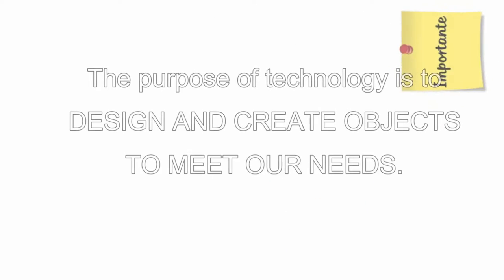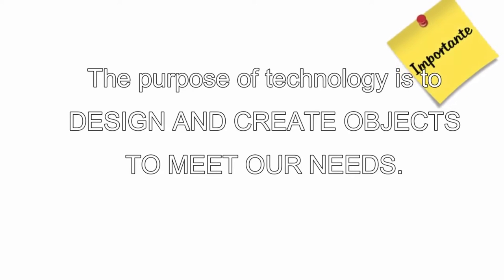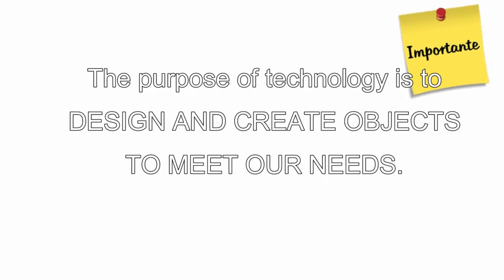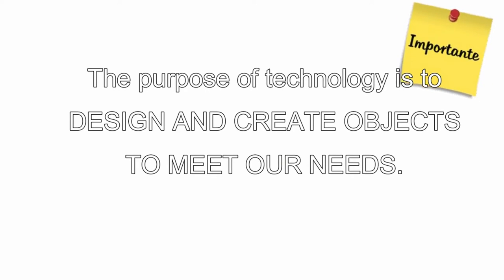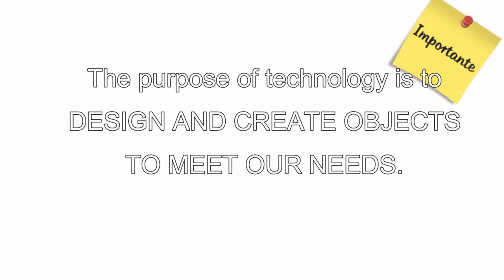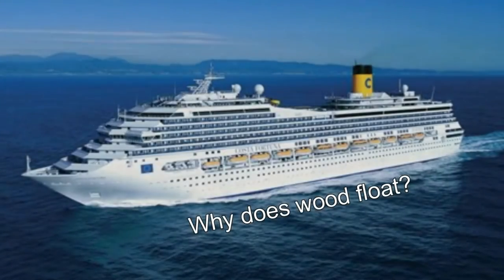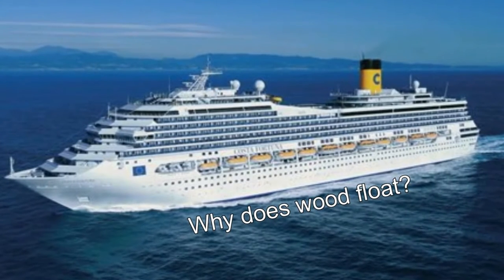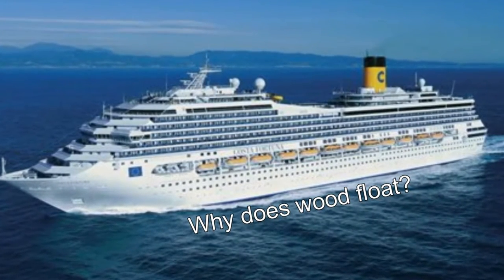On the other hand, the goal of technology — which is to say, the goal of architects and engineers — is to solve problems. The purpose of technology is to design and create objects to meet our needs. Its purpose is not to explain anything; its purpose is to create useful objects. For example, an engineer might use the scientific knowledge that explains why wood floats in order to build a ship.